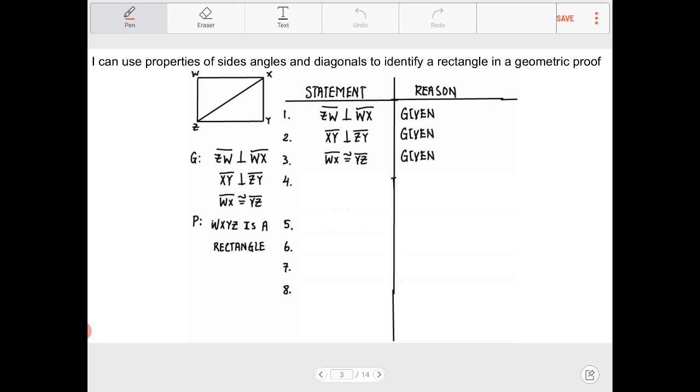So here in this case I noticed that I have ZW is perpendicular to WX which I am going to label with right angle marks because I recognize that perpendiculars form right angles and I also recognize that XY is perpendicular to ZY so I'm also going to put in those markings there because I recognize again perpendicular lines form right angles.